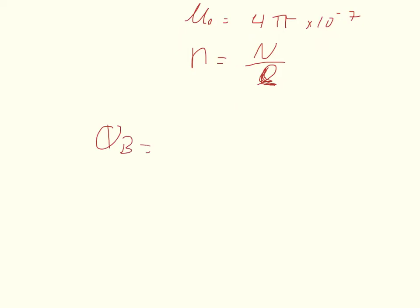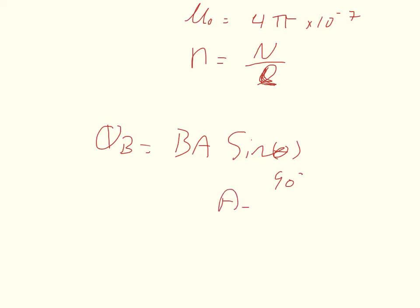Magnetic flux is going to be equal to the magnetic field times the area times the sine of theta. We want to define our angle — since it's going through a cross-sectional area, that means it's perpendicular, so theta is going to be 90 degrees. The area is equal to pi r squared.